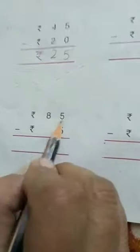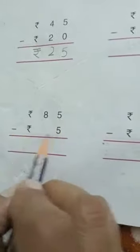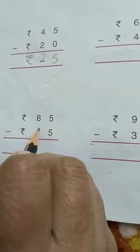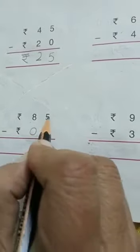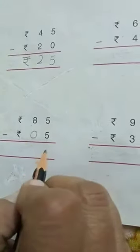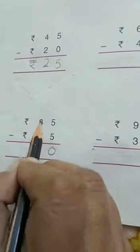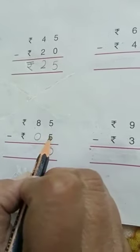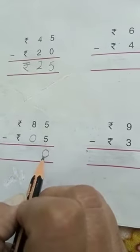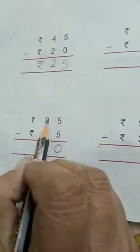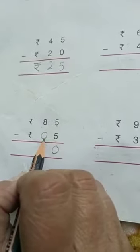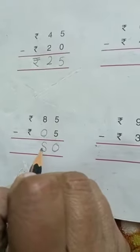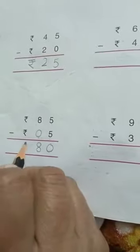Now next: rupees 85 minus rupees 5. There is no tens digit number, so we can write 0 here also. 5 minus 5 is 0. And 8 minus 0 — 0 has no line, so 8 remains 8. Answer is rupees 80.